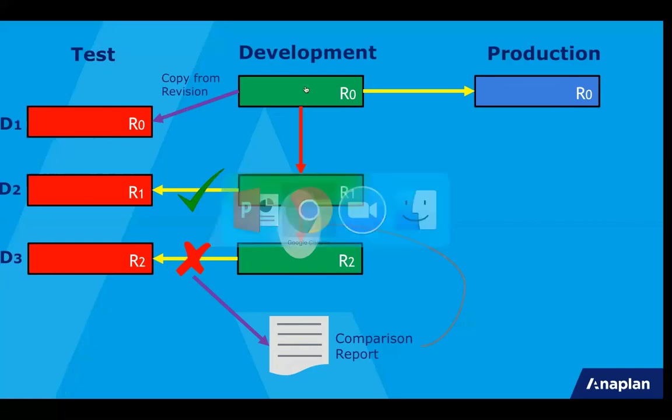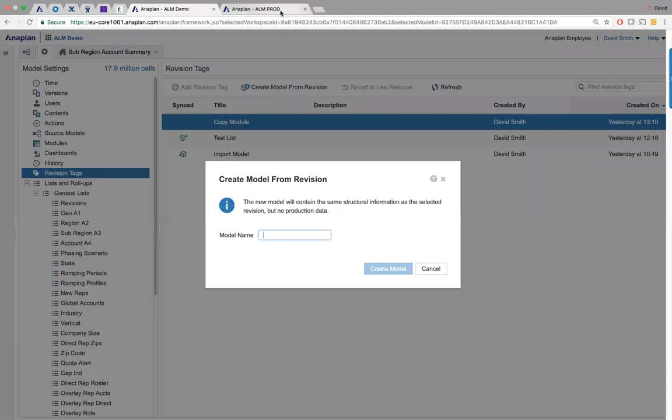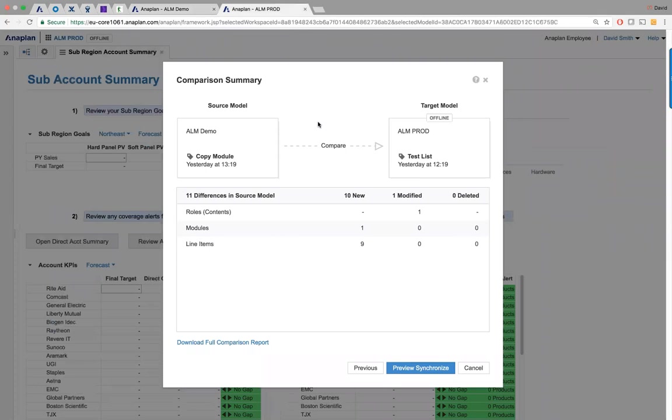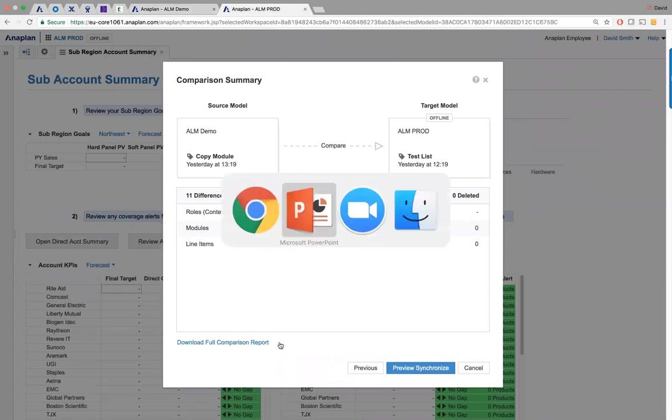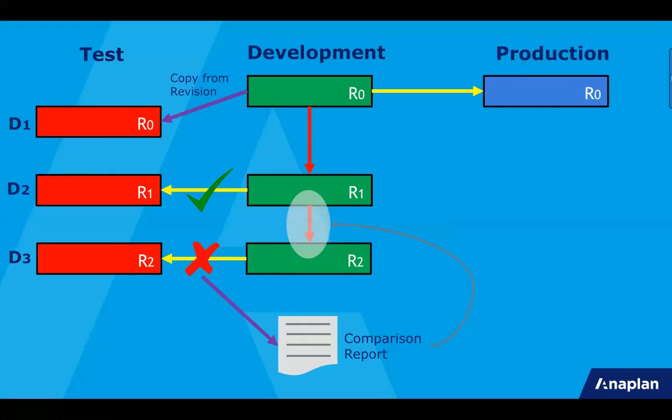And as a reminder, this can be found on the comparison summary page of the synchronized at the bottom of the page here. So downloading that gives you the full details of everything that's changed between those two revisions. So hopefully, you'll be able to see what sequencing's happened, and try and maybe split the revision into two, and try and do a synchronized with maybe a smaller part of those changes.